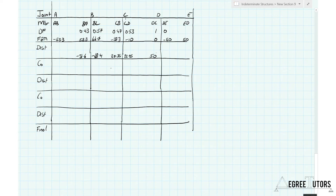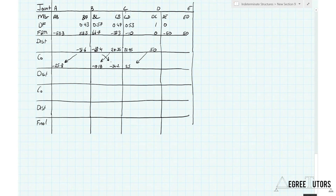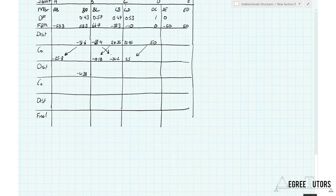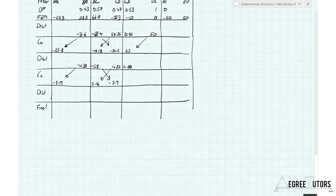Now we carry over our carryover moments. Balancing joint B again, we have negative 4.38 and negative 5.8 on one side, and 4.32 and 4.88 on the other side. Remember the cantilever got balanced at the start and is then left alone. Carrying over again and balancing out, we get negative 0.93, minus 1.23, plus 1.36, and plus 1.54.